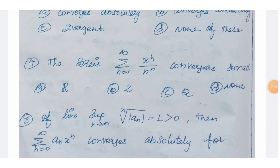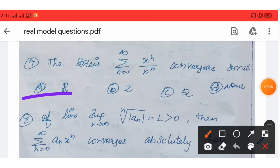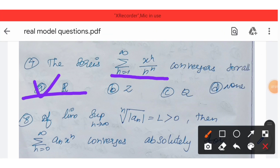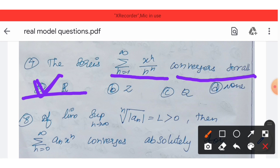Next: the series summation n = 1 to infinity of x^n / n^n converges for all real numbers. Option A is the correct answer.